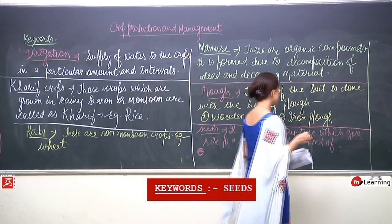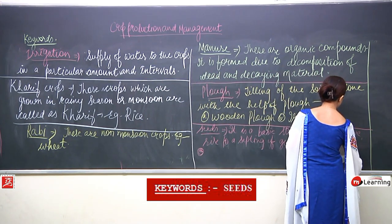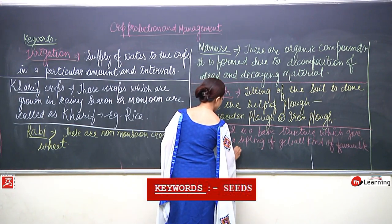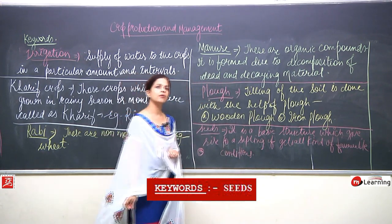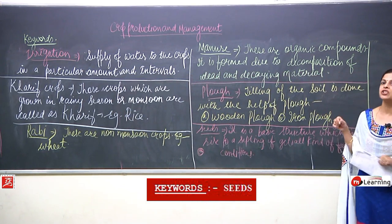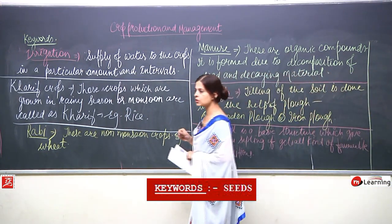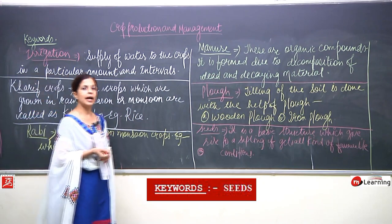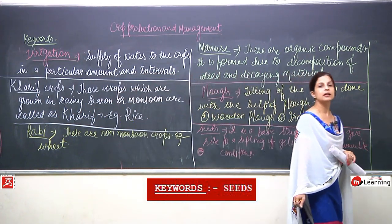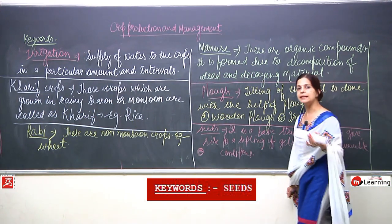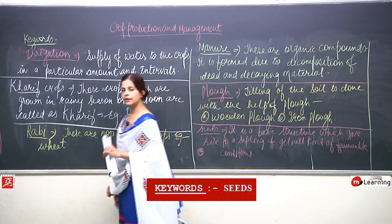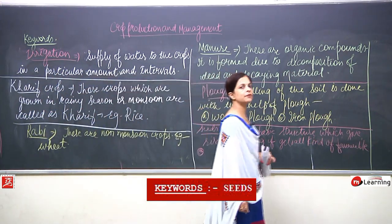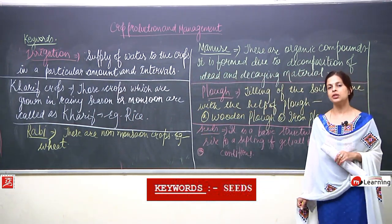A seed gives rise to a sapling if it gets all kinds of favourable conditions. A seed is a small basic structure which comes out from a fruit, and when it is sown in the soil, if the seed is of good quality, it is going to give a sapling. Certain conditions are required — it will need space, good quality of soil, and the seed itself should be of good quality. A little amount of sunlight is also required.